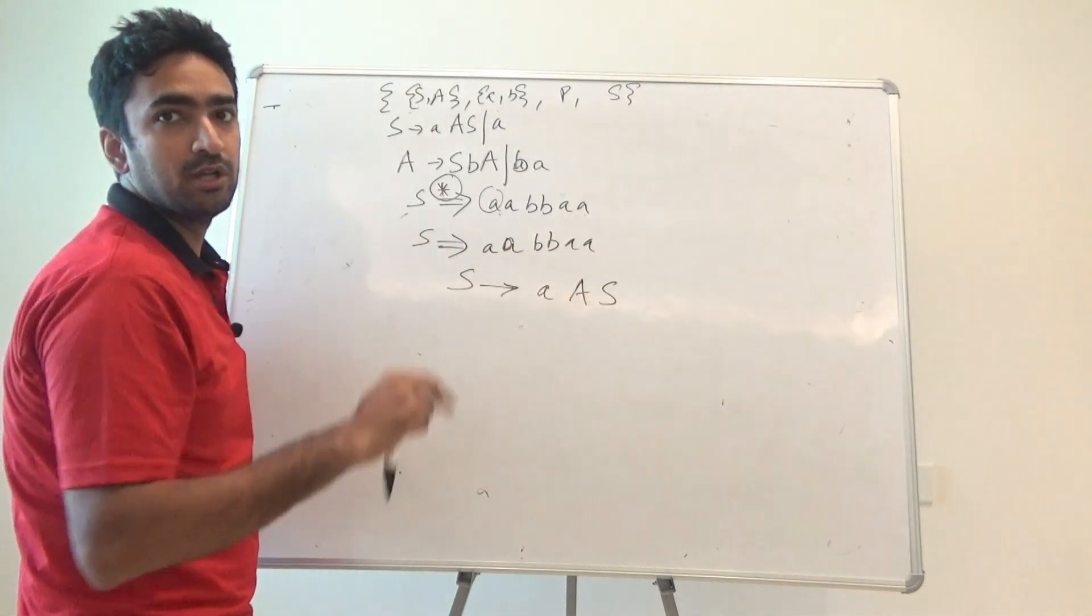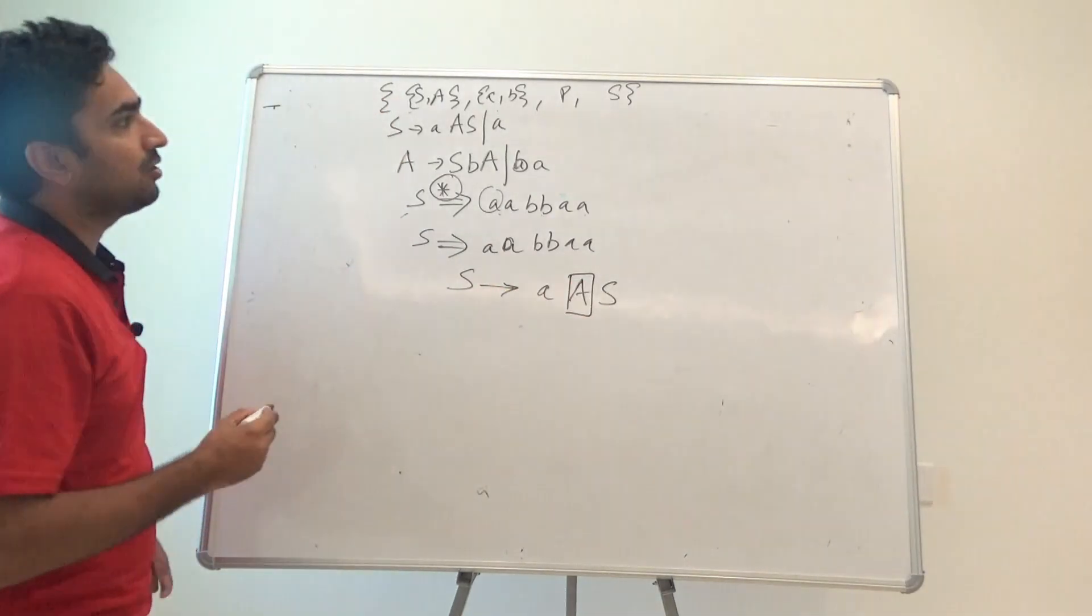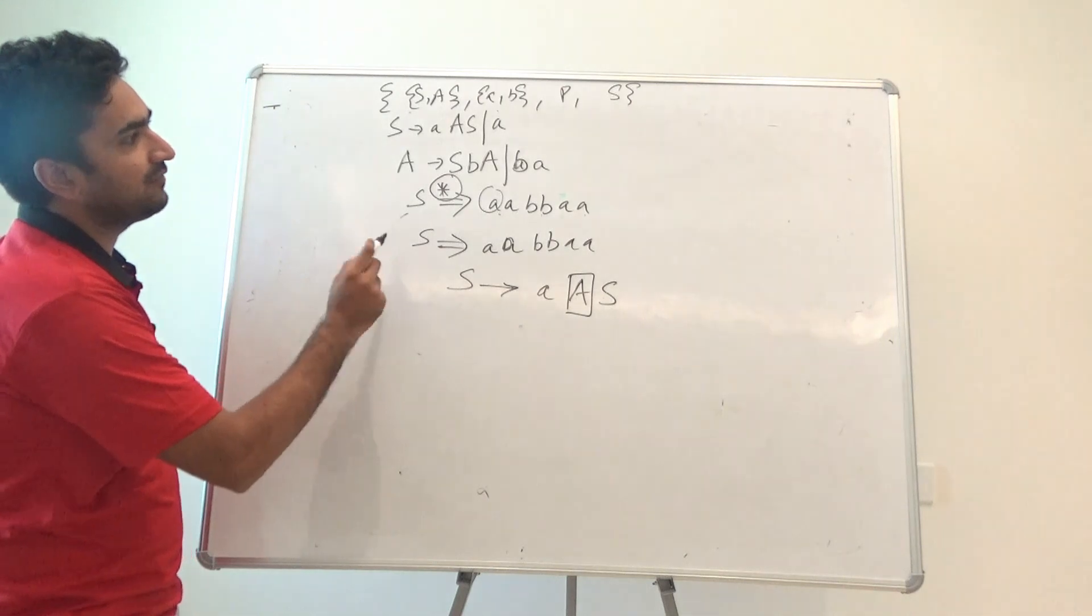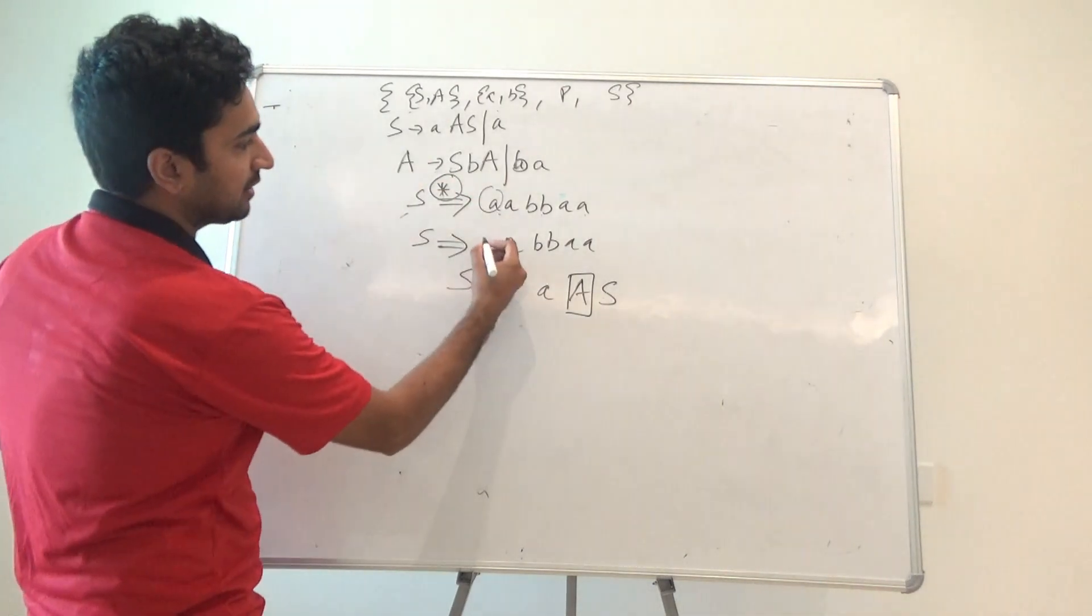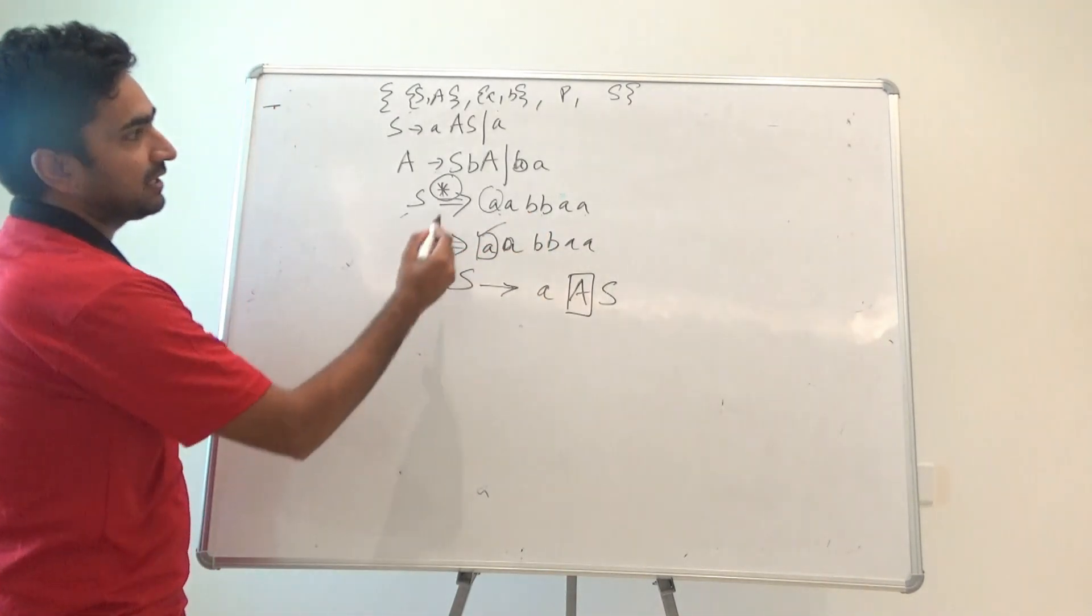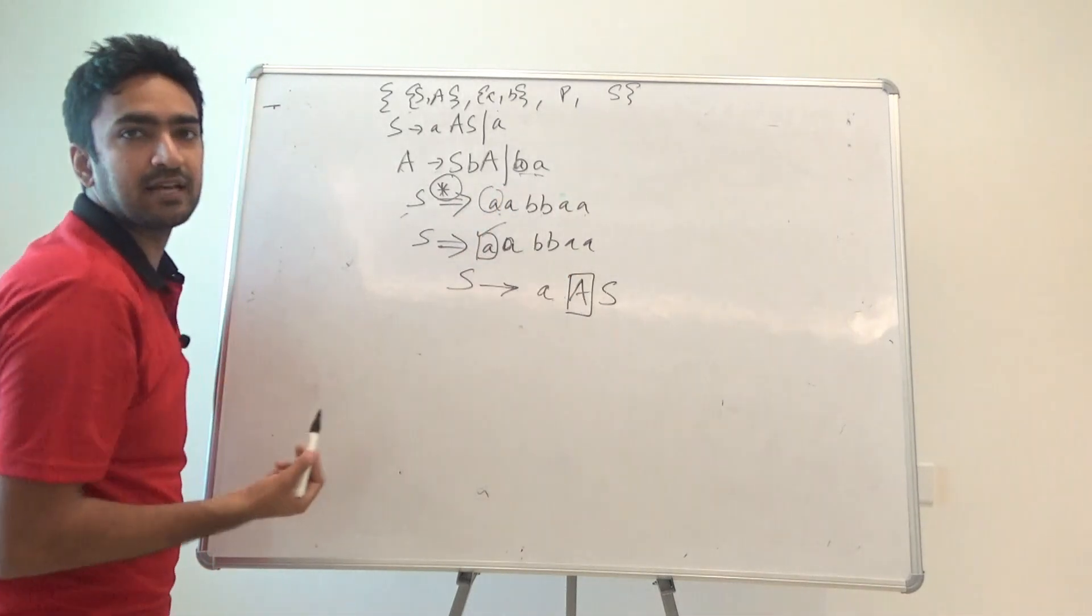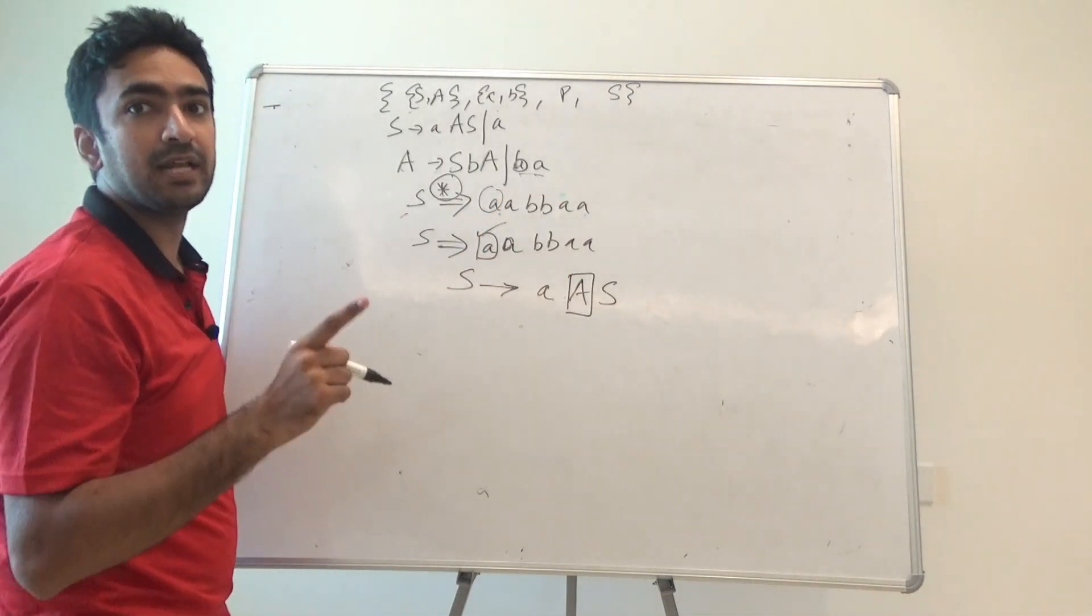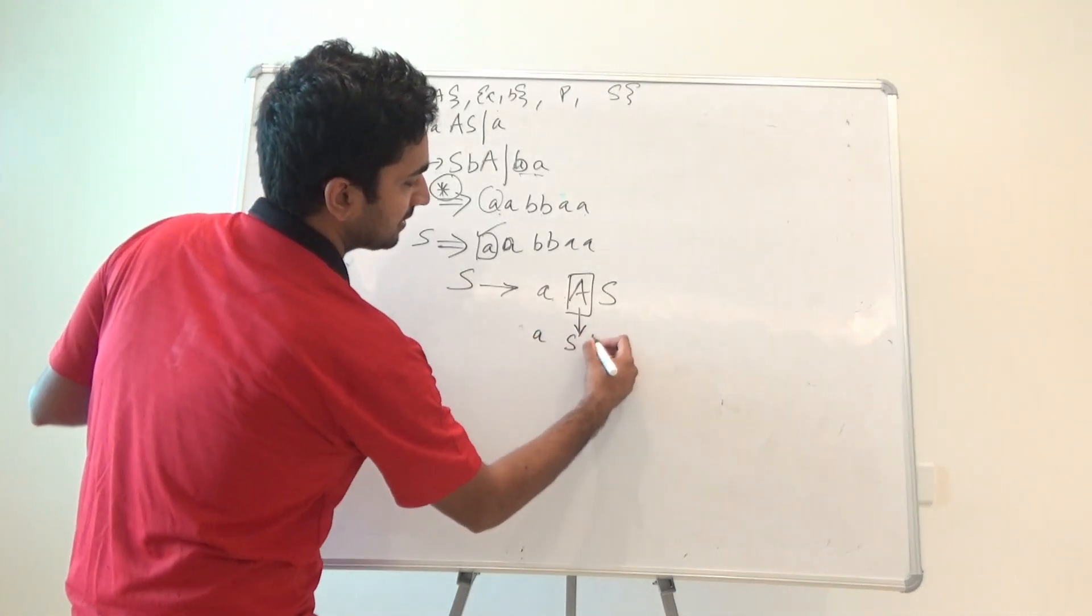Now it's up to us that we have to pick either this A or this S. There are two non-terminals given. I'm picking the leftmost one out of it. Now the leftmost out of it is giving us SbS, Sba, and ba. Now I want to see this is derived. I want to get A, but if I write this A value as ba, I will get aba, something which I don't want.